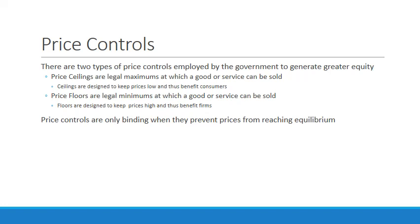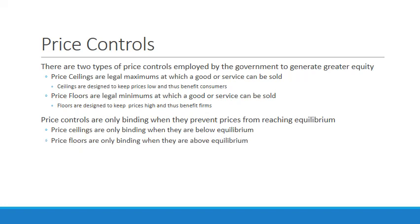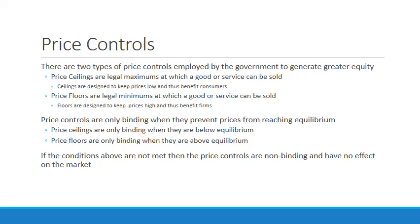Price controls are only binding when they prevent the price from actually reaching equilibrium. There is a non-binding and a binding version for both price floors and ceilings. Ceilings are only binding when they're below equilibrium, whereas floors are only binding when they are above equilibrium. If those conditions are not met, the price controls are non-binding and won't have any effect on the market.